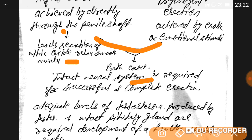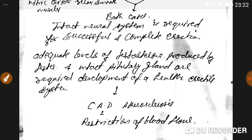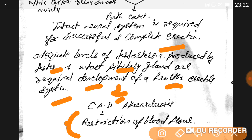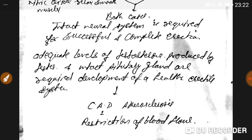In both cases, an intact neural system is required. Successful and complete erection also requires adequate levels of testosterone produced by the testes and an intact pituitary gland. Additionally, coronary artery disease (CAD) due to atherosclerosis restricts blood flow to the genital penis, which is another cause of erectile dysfunction.